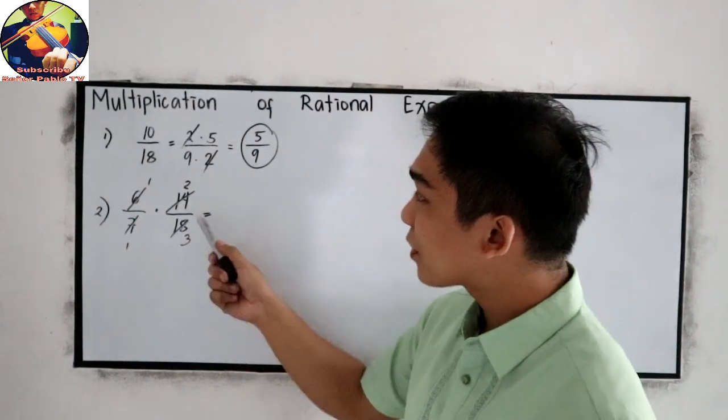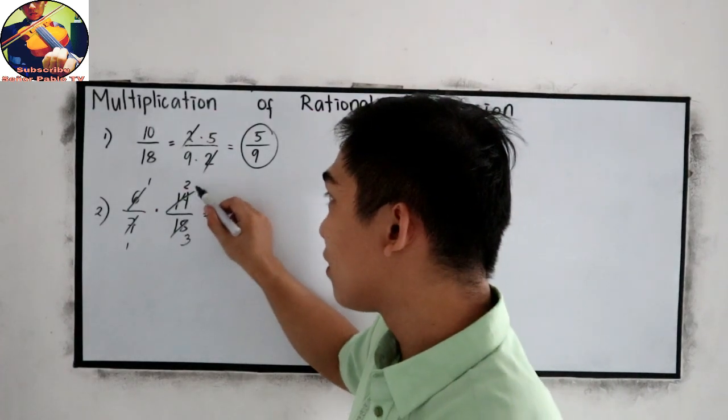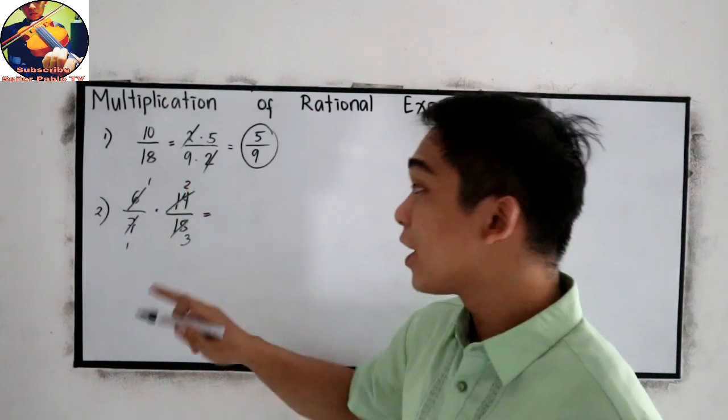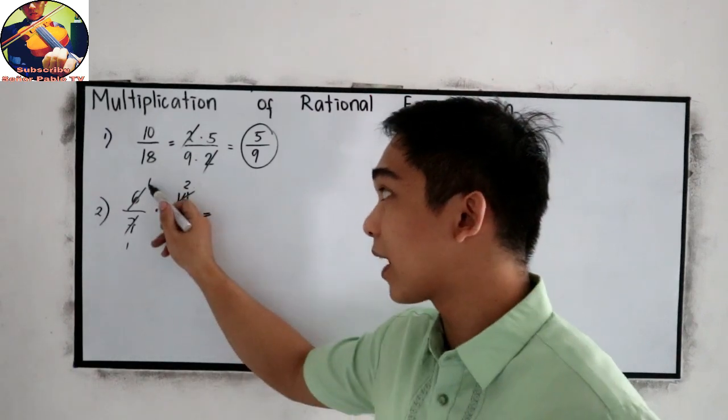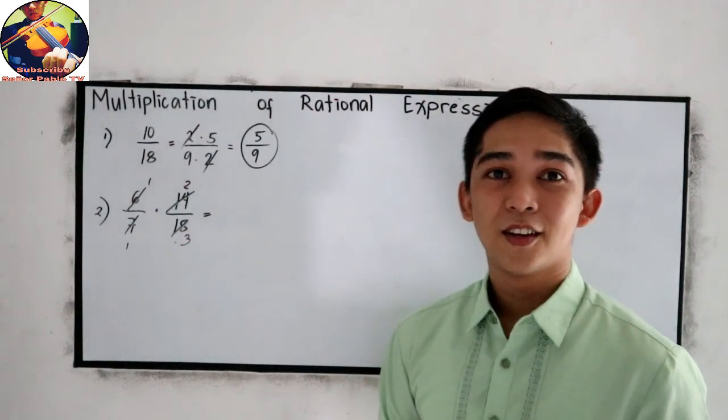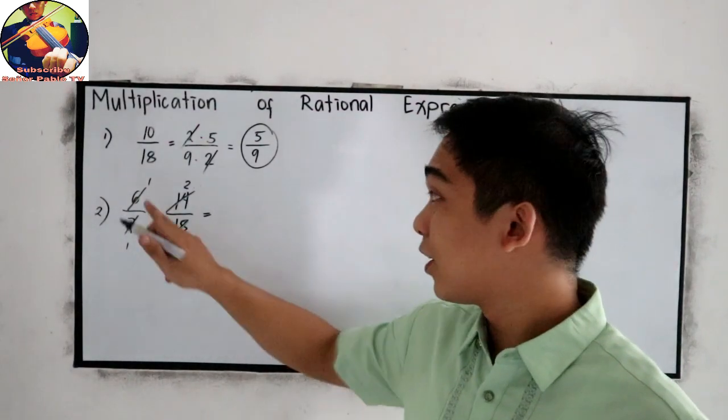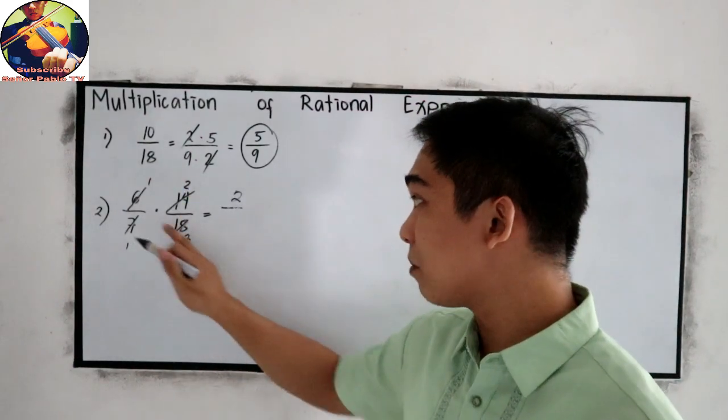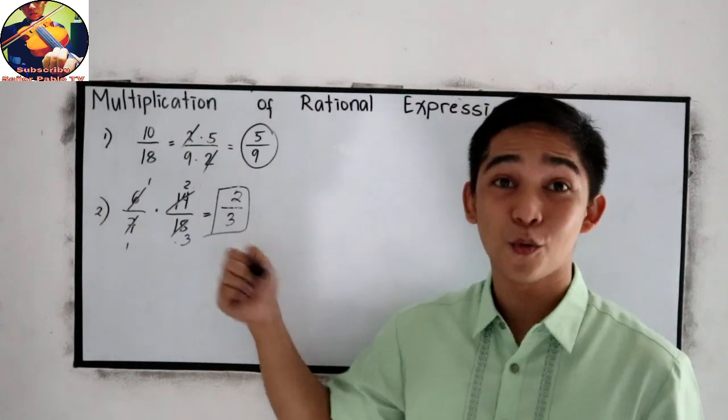Or if you want, get the factors of 14 and 18. For this one, 2 times 7, I will cancel 7, that will become 2. And for 6 and 18, factors of 18 are 6 times 3. So I will cancel 6. You can explore different techniques. Now, simplify: 1 times 2 is 2 over 1 times 3, that is 3. This will be our final answer.